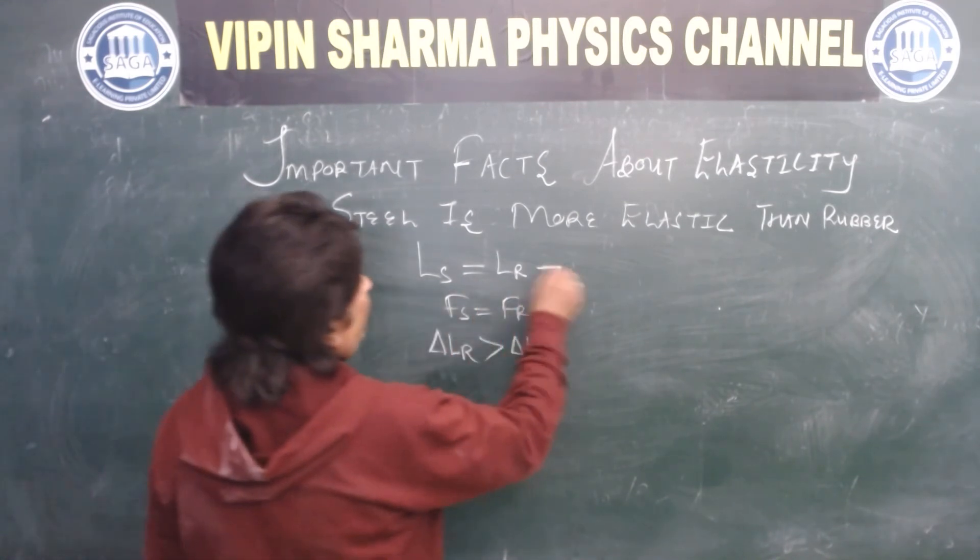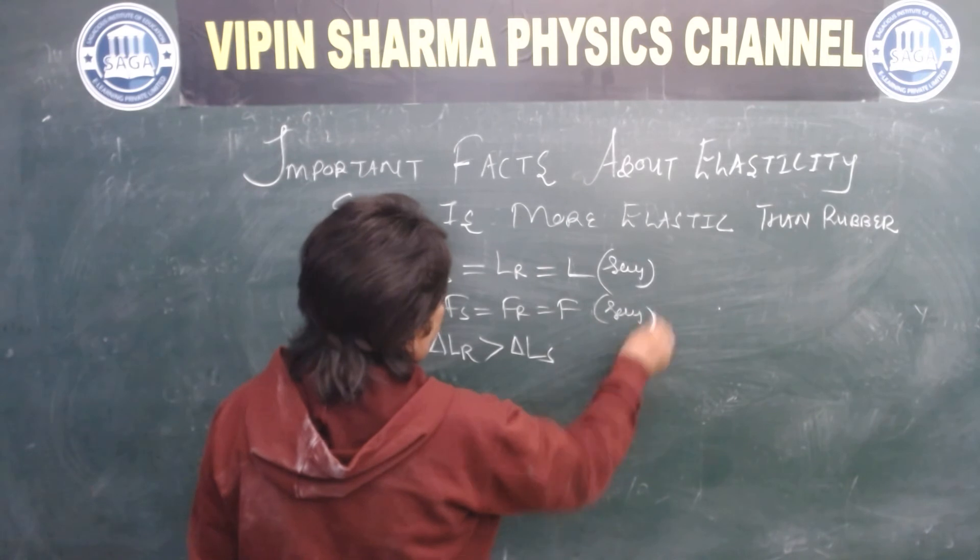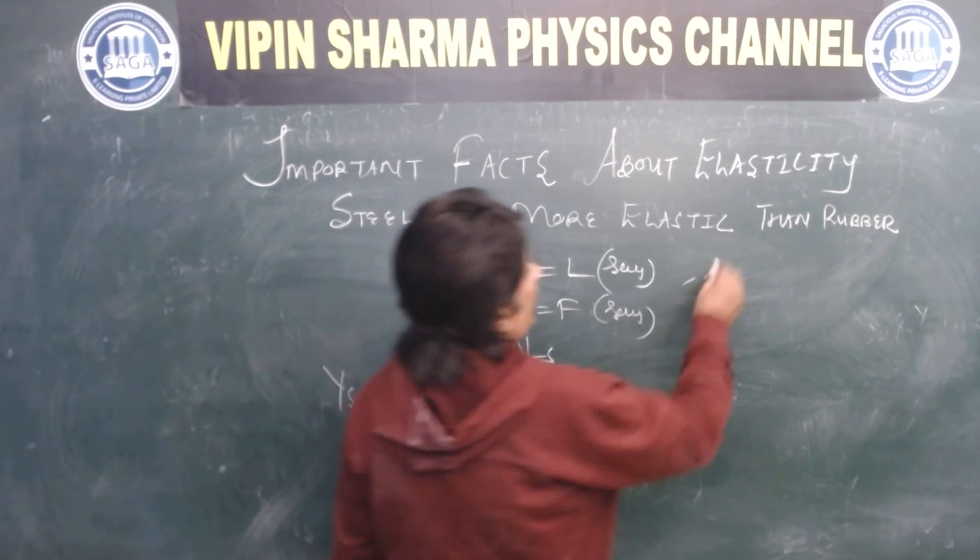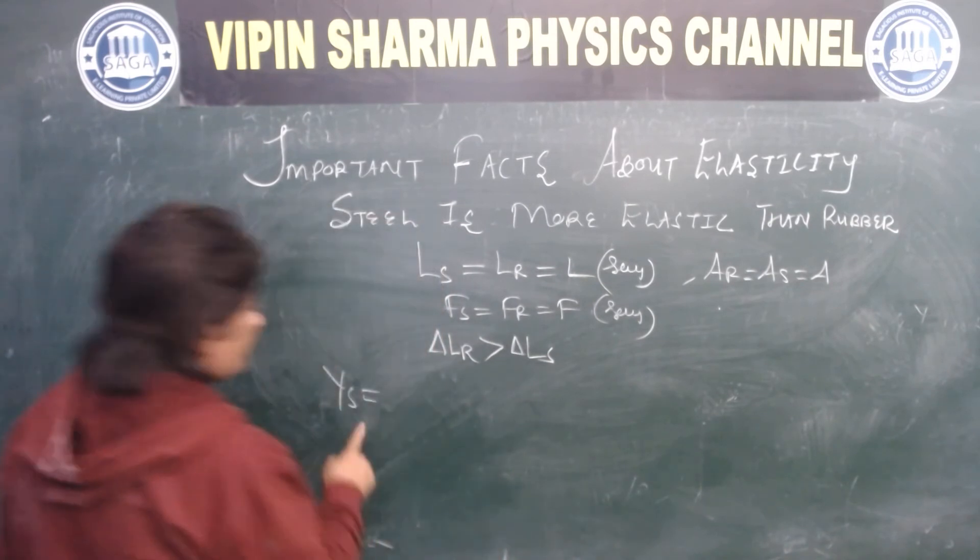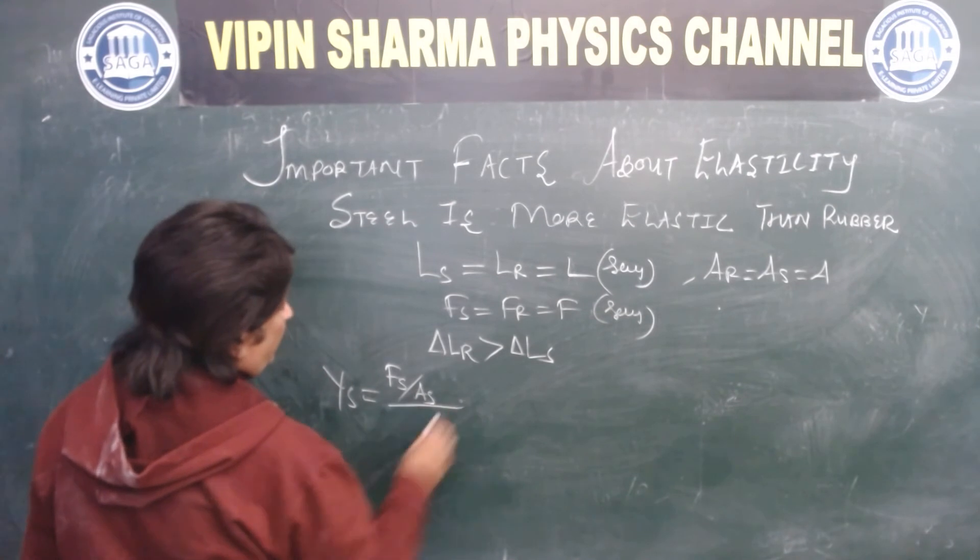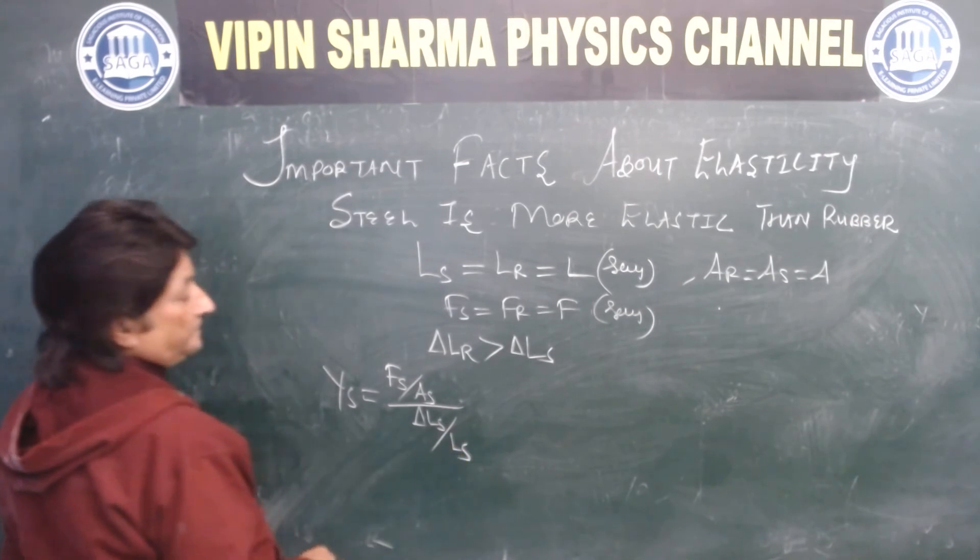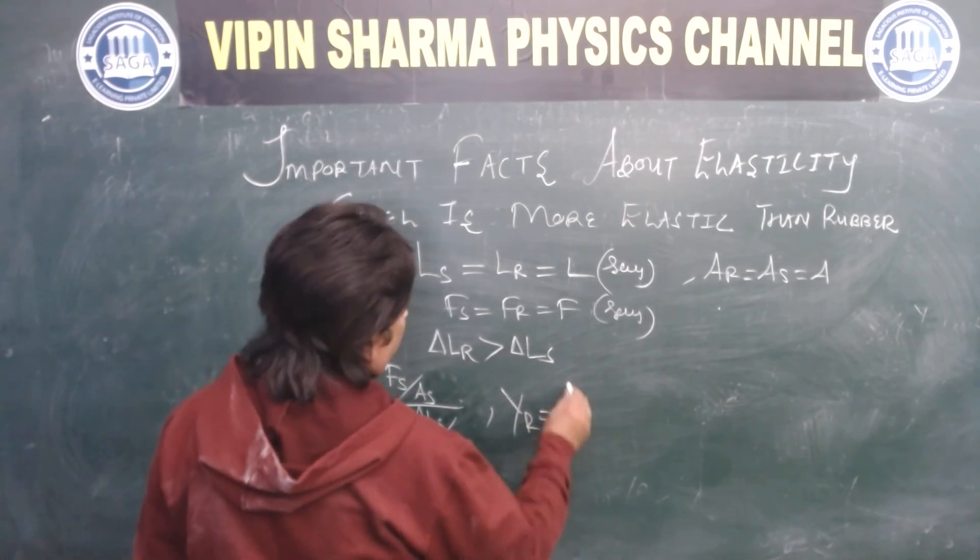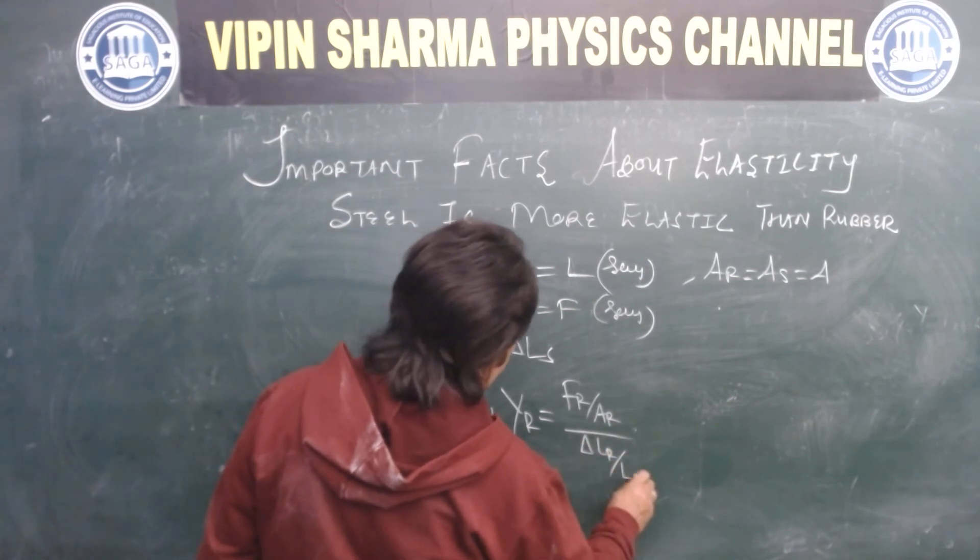Suppose ls equal to lr equal to l, and force f. Now what is ys? If area of cross section of rubber and steel are also the same, then ys steel Young's modulus is force on steel upon area of cross section of steel divided by delta ls upon ls - stress upon longitudinal strain.